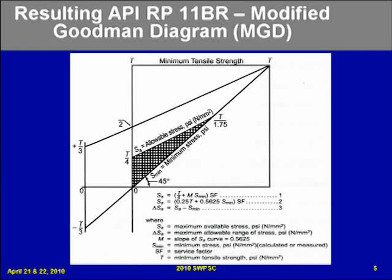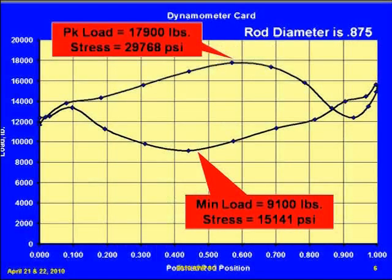Let's look at how to use that diagram. We get a dynamometer — it could be from a design, or from actually going out and weighing a well. We'll get some well loads on a dynamometer card on the rod string, and we'll just assume for this one it's a straight taper with a 0.875-inch rod diameter.